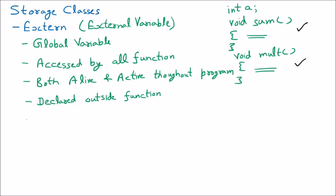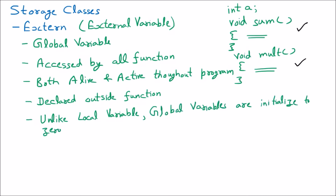Unlike local variables — auto is the local variable — global variables are initialized to zero by default. Whenever you declare any global variable, like int a, the compiler will automatically allocate the value zero. That is the default value of the global variable. But if you declare a local variable, we have seen in many programs that they get a garbage value. With the global variable, they are by default initialized as zero.